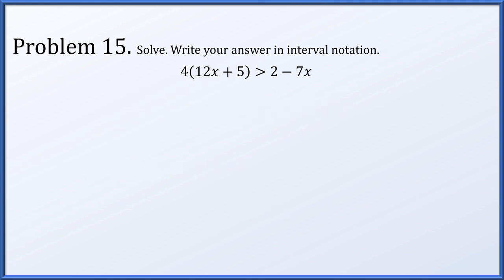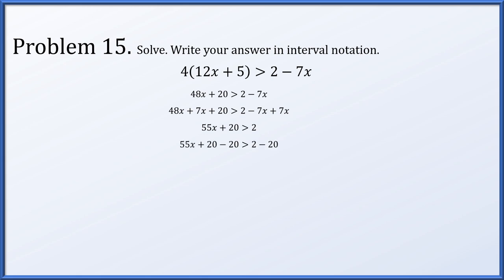Problem fifteen: expand the multiplication on the left to get 48x plus 20 is greater than 2 minus 7x. Add 7x to both sides: 55x plus 20 is greater than 2. Subtract 20: 55x is greater than negative 18. Divide by 55, a positive number so no flip needed: x is greater than negative 18 over 55. As an interval, open parentheses on both sides since the endpoint is not included.